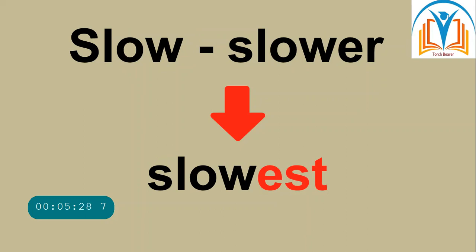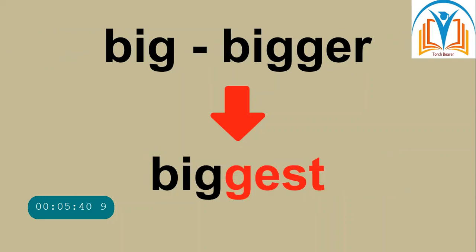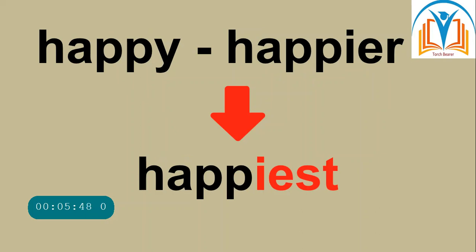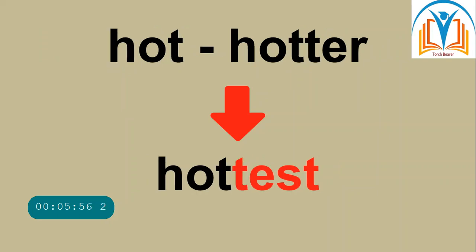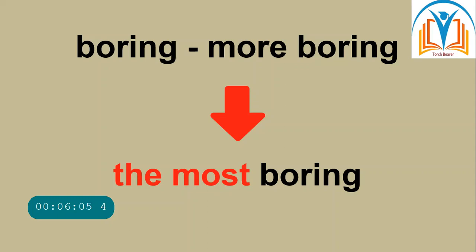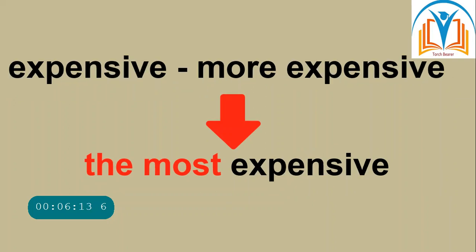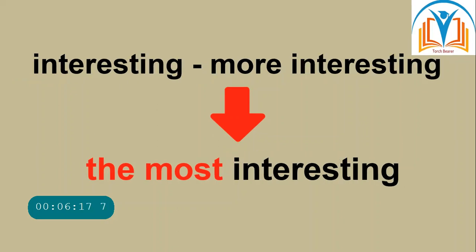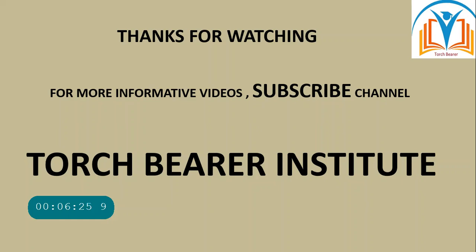Let's practice. Fast, faster, fastest. Slow, slower, slowest. Strong, stronger, strongest — strongest is the superlative. Big, bigger, biggest. Happy, happier, happiest. Cold, colder, coldest. Hot, hotter, hottest. Cheap, cheaper, cheapest. Boring, more boring, the most boring. Handsome, more handsome, the most handsome. Expensive, more expensive, the most expensive. Interesting, more interesting, the most interesting. Well done!